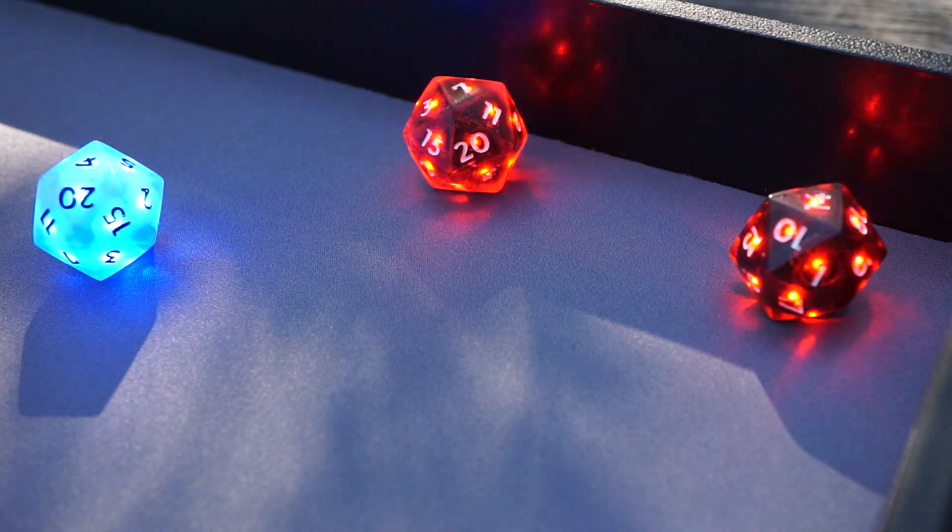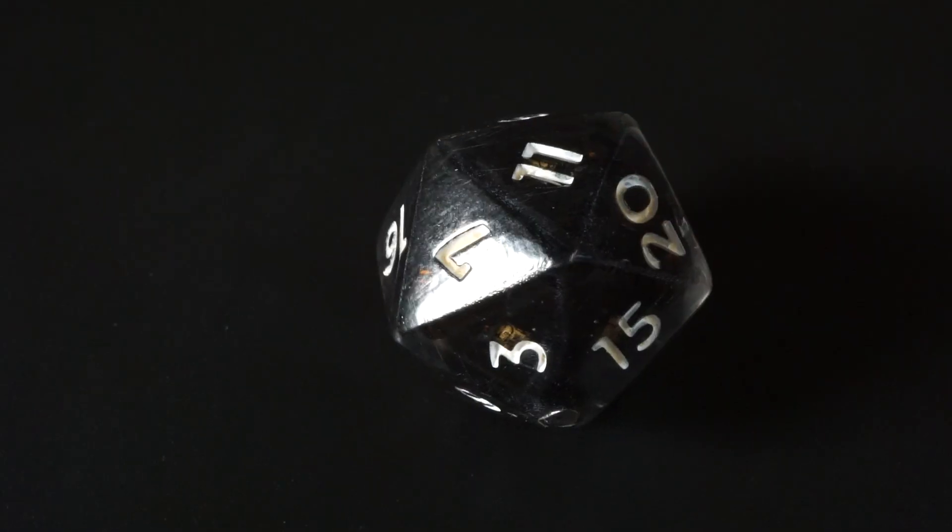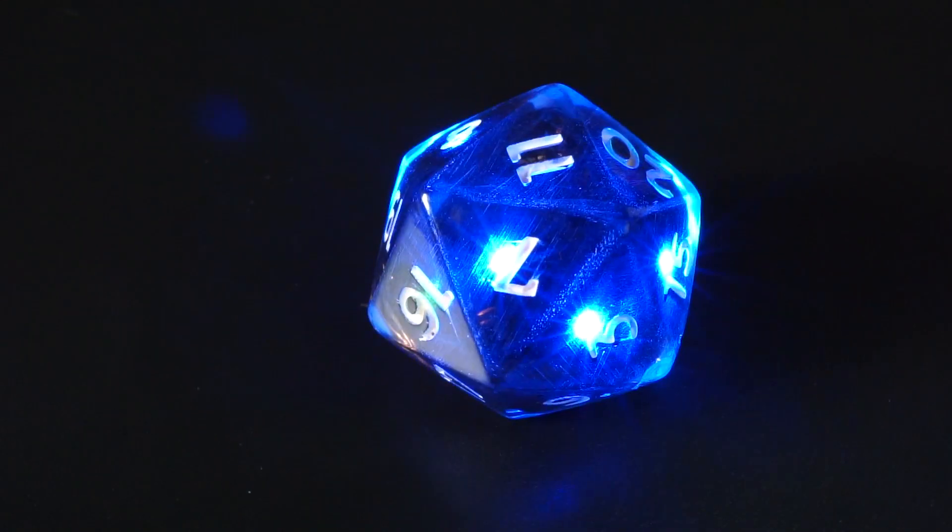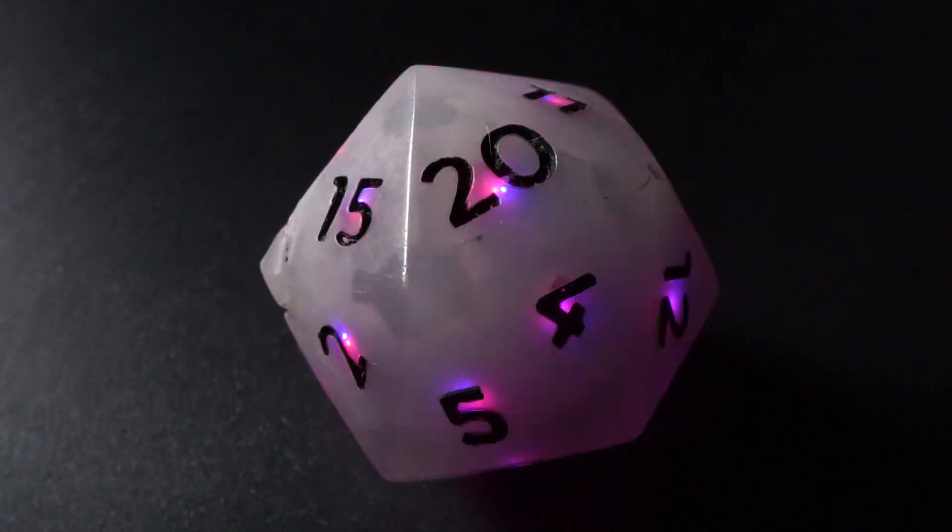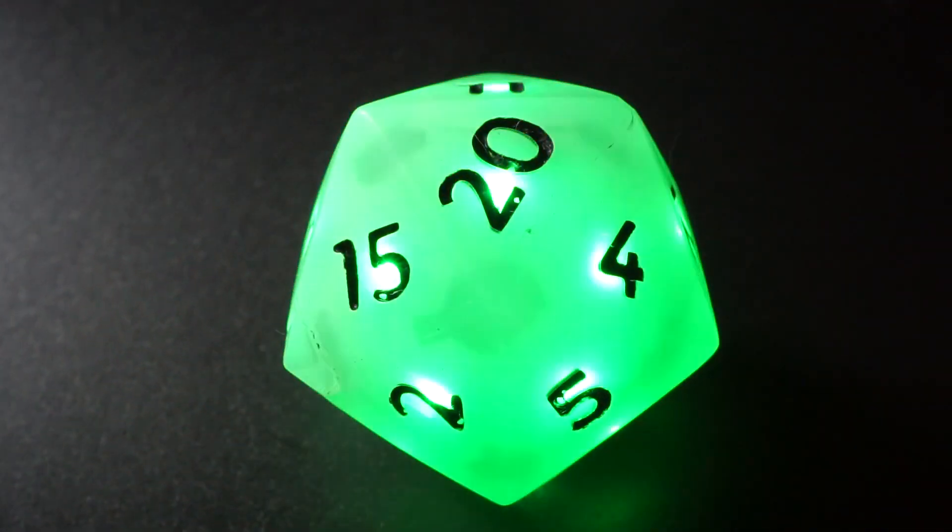The dice are full of LEDs and can light up all sorts of different colors and patterns, and they know which face is up, so they can react accordingly. This die, for instance, lights up differently if it lands on a 20 or if it lands on a 1.